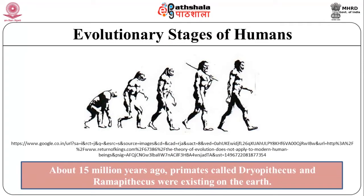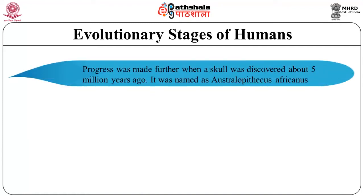This picture shows the evolutionary stages of man. About 15 million years ago, primates called Dryopithecus and Ramapithecus were existing on the earth. They were hairy and walked like gorillas and chimpanzees. Ramapithecus was more human-like while Dryopithecus was more ape-like, so they were the forerunners of the hominids. Further progress was made when a skull was discovered dating to about 5 million years ago. It had a brain size of about 500 cubic centimeters, within the range of the ape brain, but its jaws and teeth were human-like. It was probably not taller than 4 feet but walked upright, and was named Australopithecus africanus, which lived in the East African grasslands.